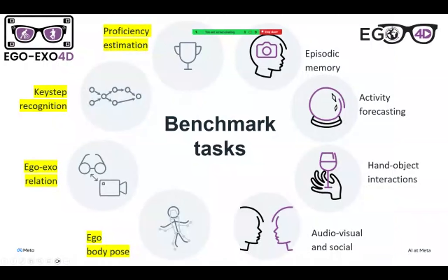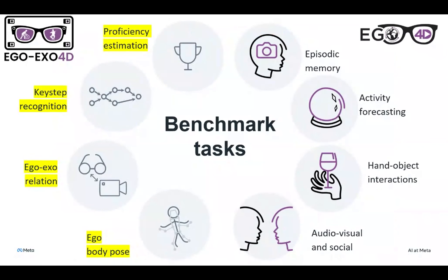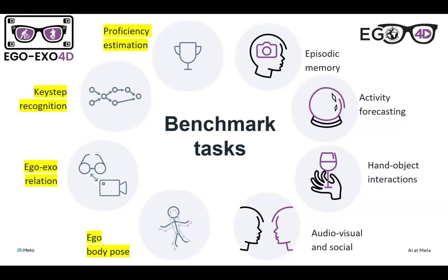The benchmark tasks accompanying EgoXO4D try to address the fundamental problems in egocentric perception for skill learning. There are four areas: proficiency estimation — gauging the level of skill from video; key step recognition — knowing exactly what fine-grained step a person is doing; ego-exo relation — the relationship between those two views; and ego body and hand pose.